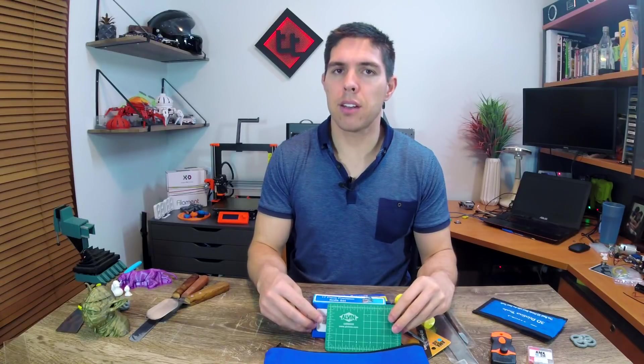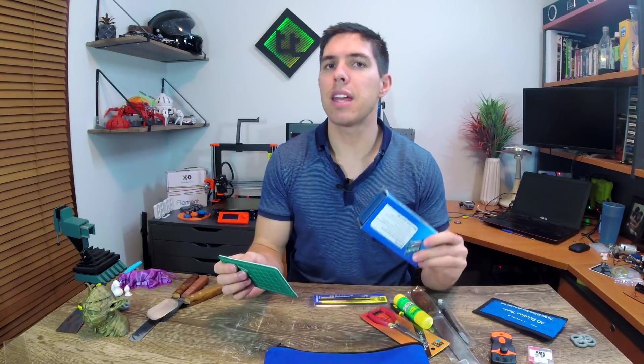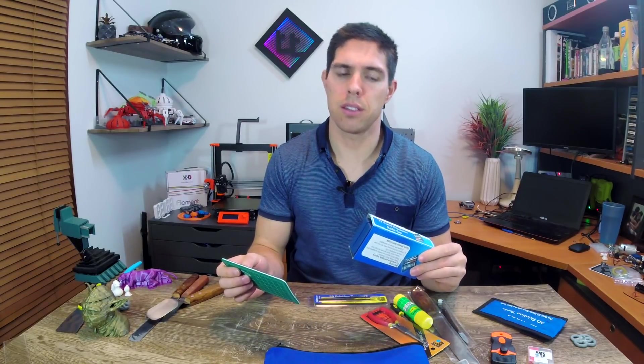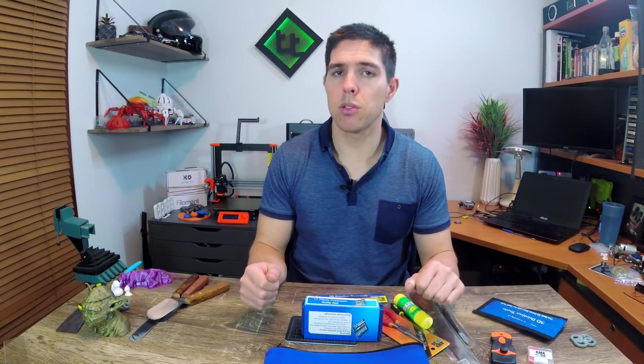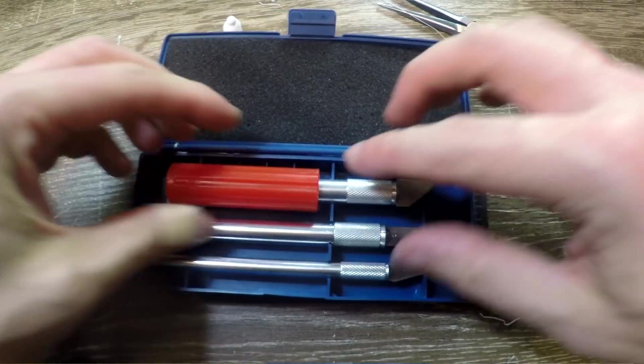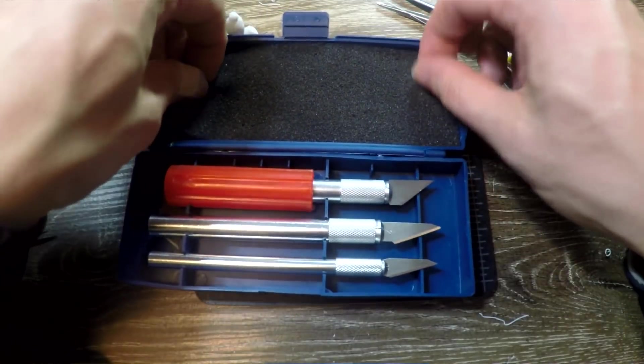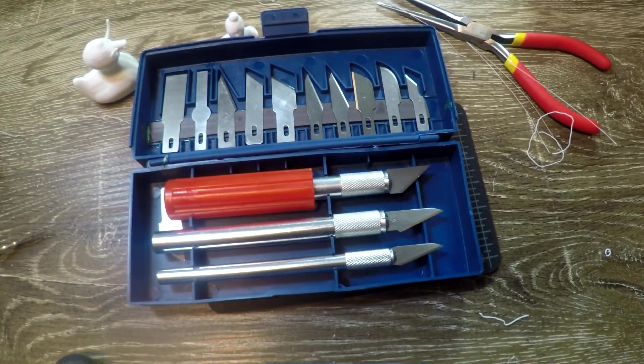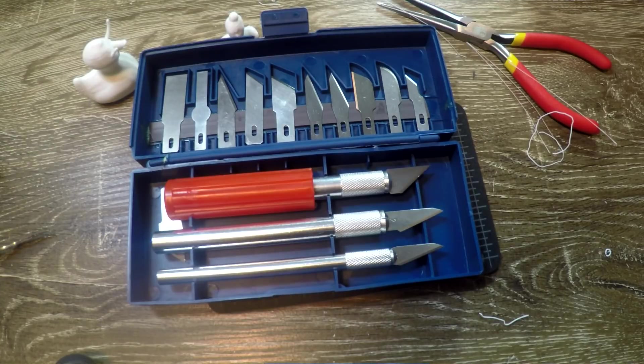They're all well and good but for me the star of the show is the cutting mat and the 17-piece precision knife set. In my existing collection of tools I have one exacto blade so this set was really really nice. It comes with three different handles, I prefer the stubby one and if you peel back the foam you can see there's a bunch of different blades for every situation.